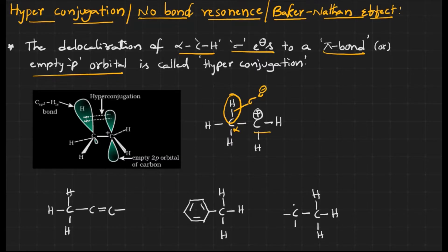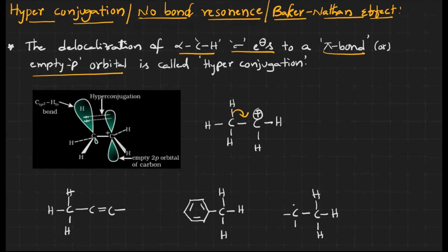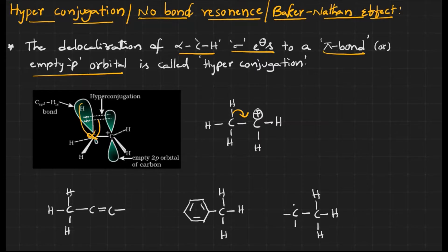Carbocation is sp2 hybridized carbon and has one empty p orbital. The sigma electrons from the alpha C-H bond delocalize into this empty orbital, and as a result the carbocation is stabilized. The sigma electrons of the C-H sigma bond delocalize into the empty orbital and stabilization of the carbocation takes place.